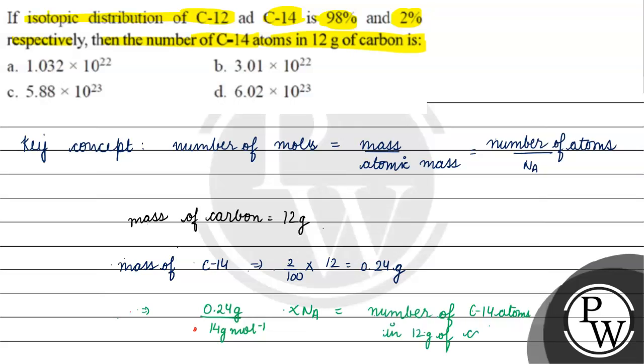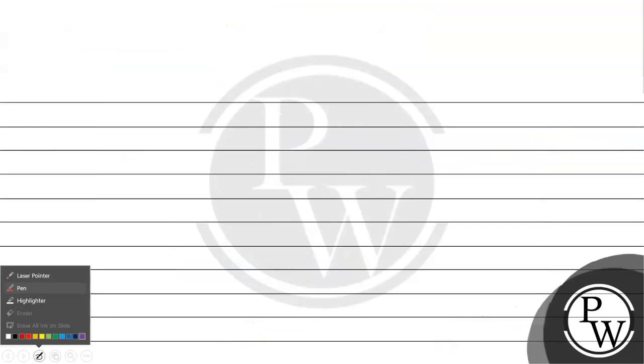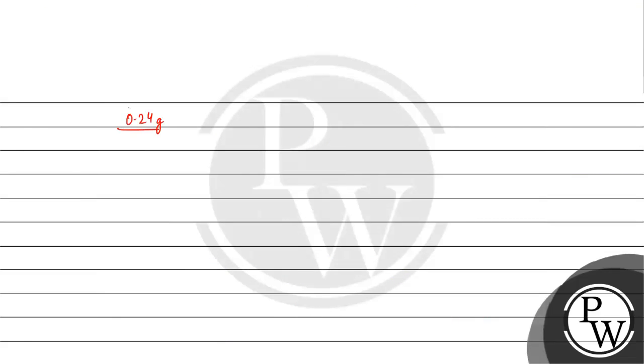If we solve this, it will be 0.24 grams by 14 grams per mole, multiplied by Avogadro's number value, 6.022 times 10 to the power 23 mole inverse.